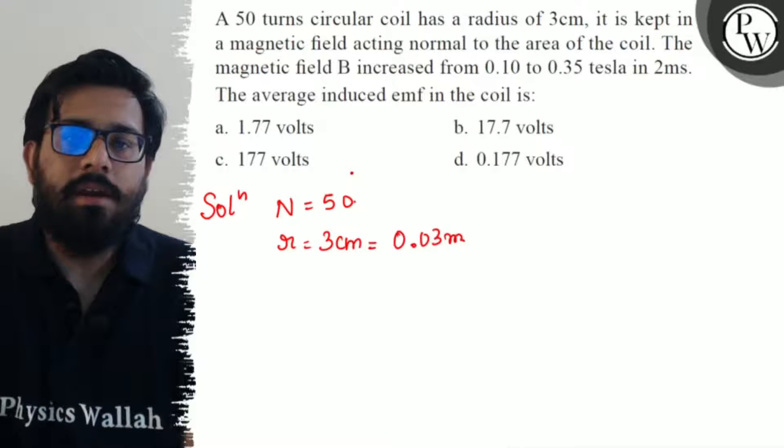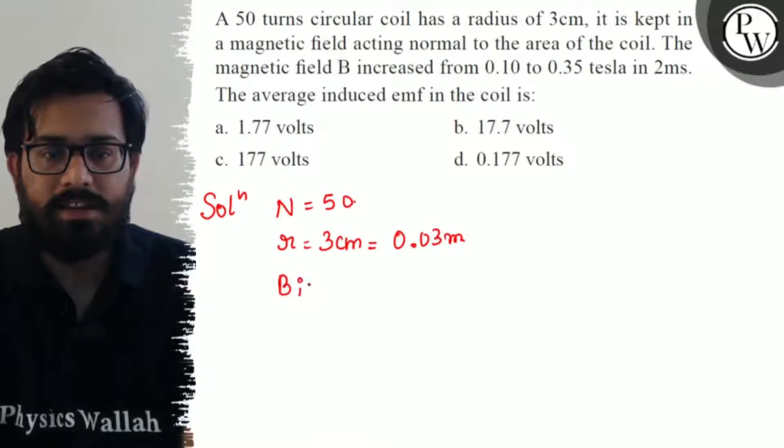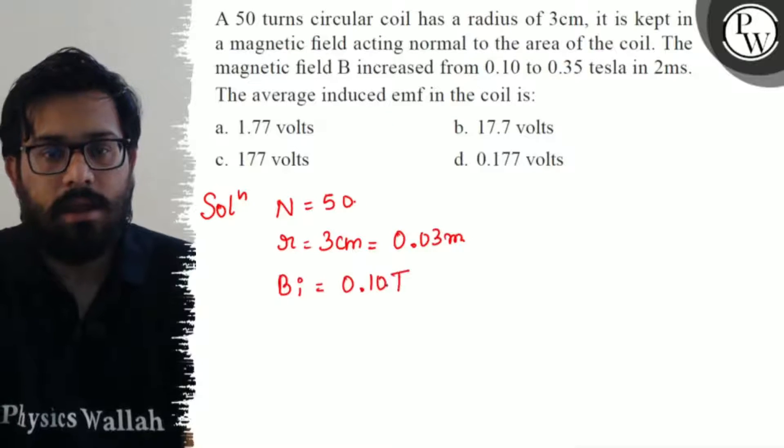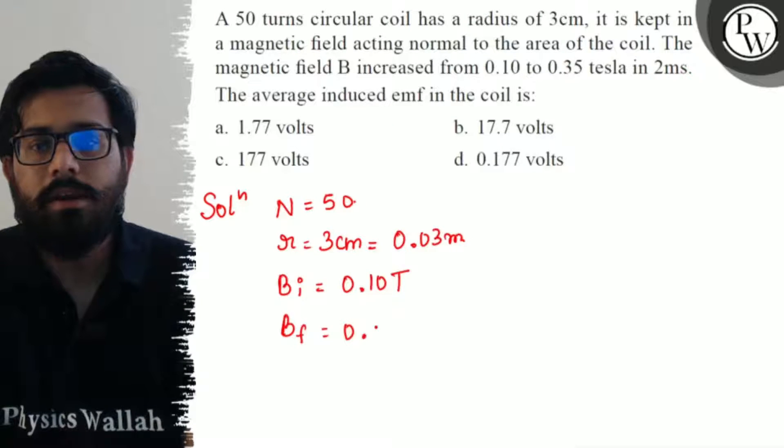It is kept in a magnetic field which is acting normal to the area of the coil. The magnetic field increases from the initial magnetic field of 0.10 tesla to the final magnetic field of 0.35 tesla.